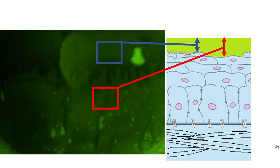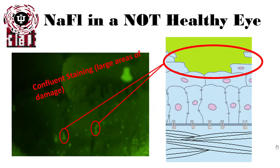Here's a more exaggerated example where we can see that thickness matters. Where the tear film is thicker, it appears more green; where it is thinner and smoother, it looks darker.